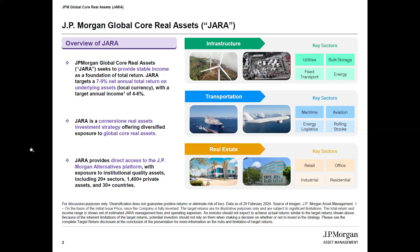We target a 7% to 9% total return over the market cycle, of which roughly half to two-thirds comes from a quarterly income stream. The current dividend yield is in the mid to high fives. We build this portfolio using the existing JP Morgan alternatives platform, which gives us over 20 different sectors on a look-through basis, over 1,400 private assets, and over 30 different countries.